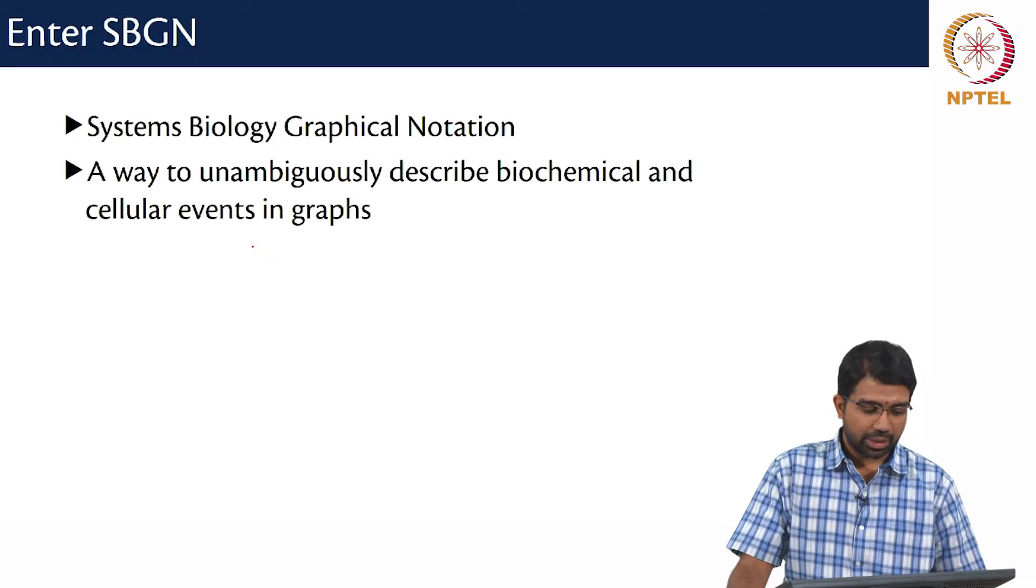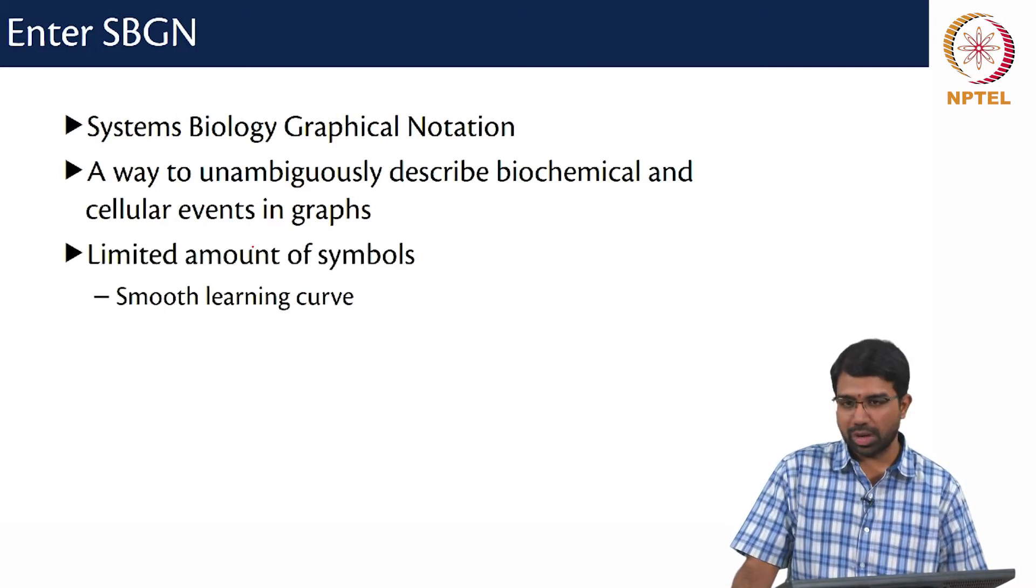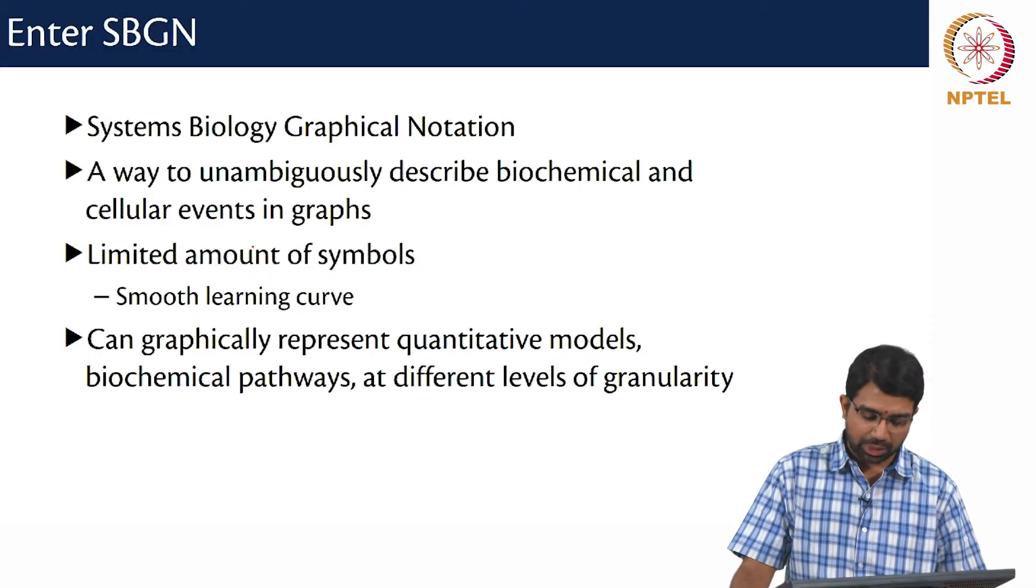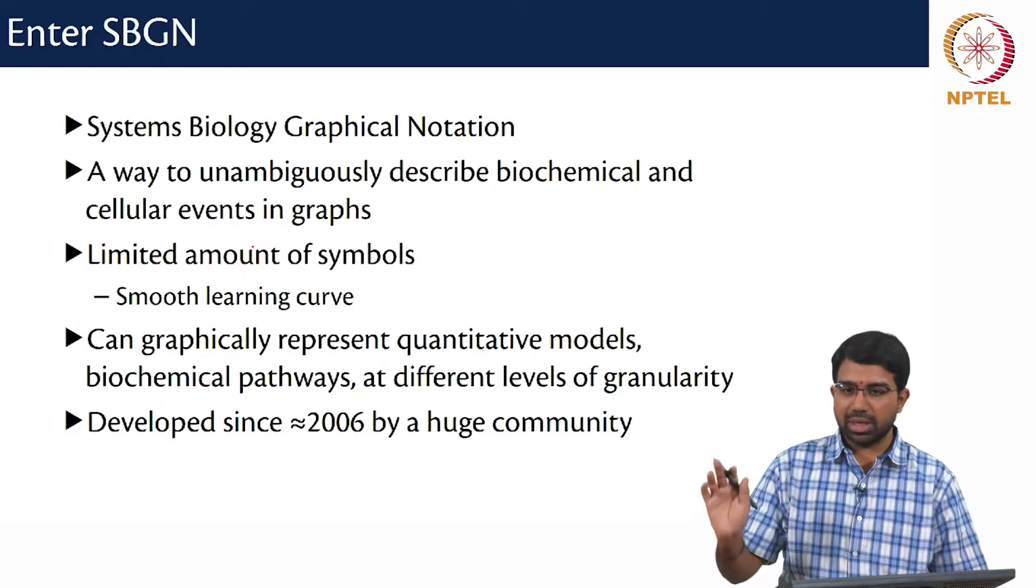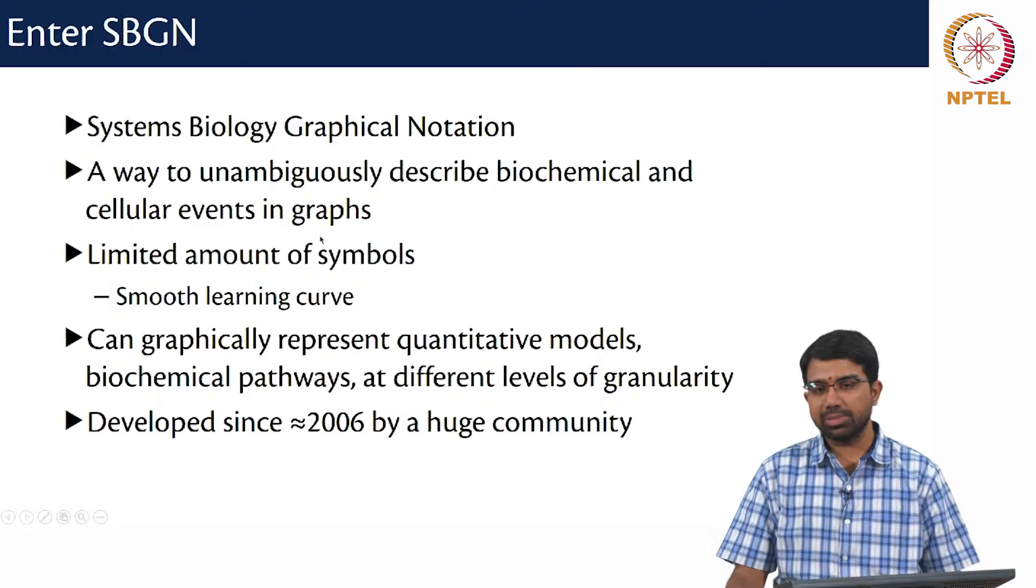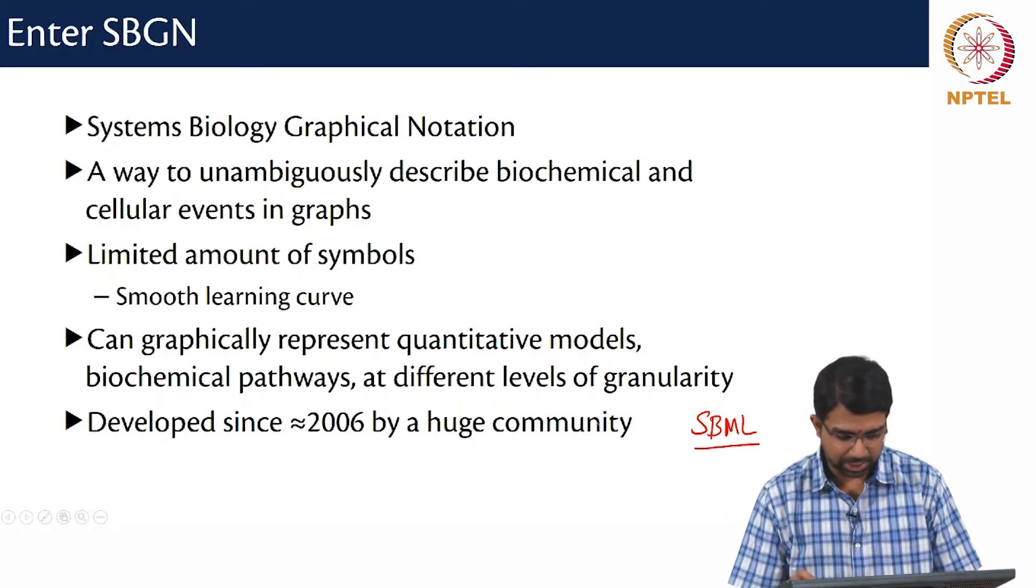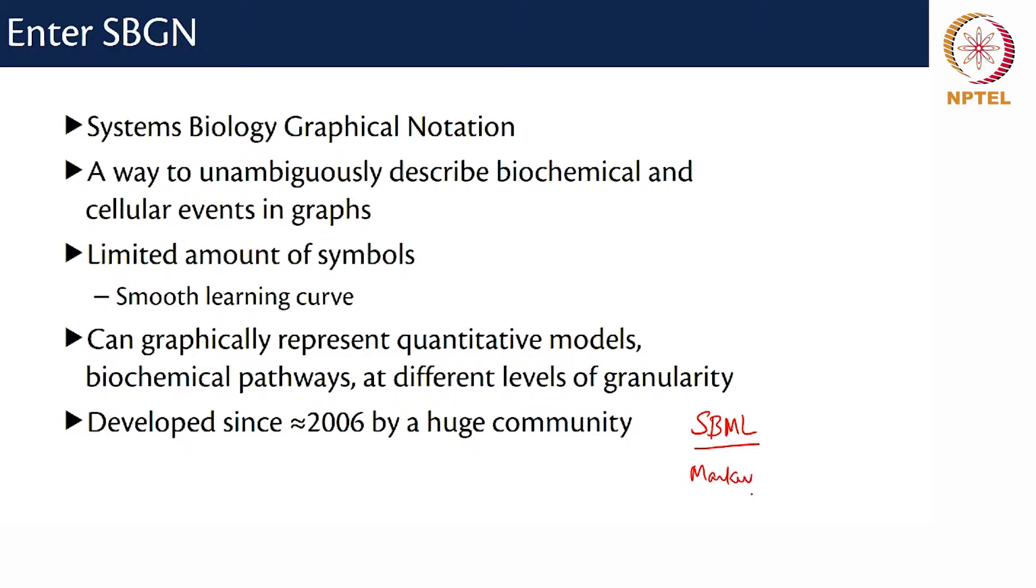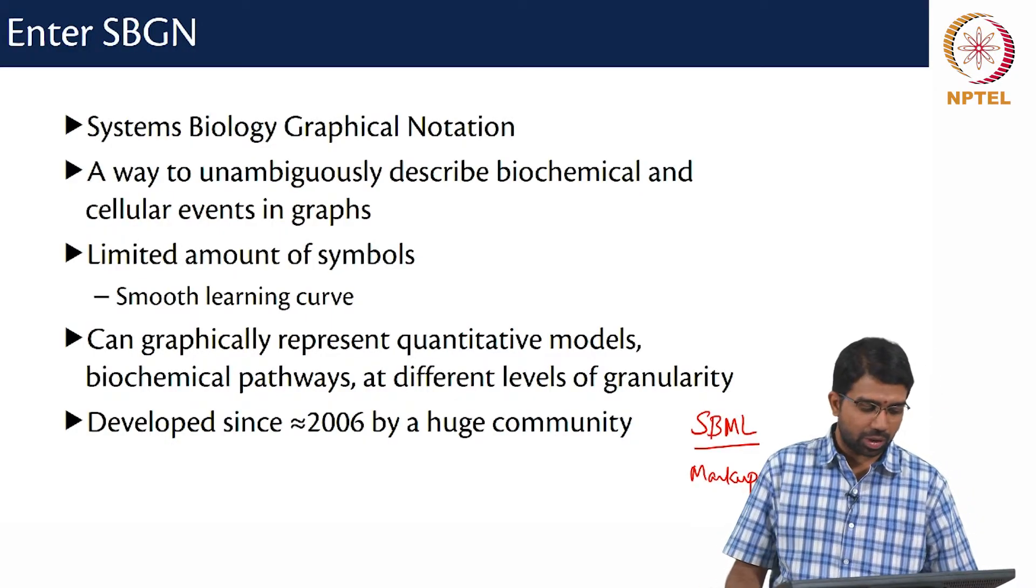So to basically surmount this issue, there came SBGN which stands for Systems Biology Graphical Notation. It is a way to unambiguously describe biochemical and cellular events in graphs. Limited amount of symbols, therefore you have a smooth learning curve and you can graphically represent several quantitative models of biochemical pathways at different levels of granularity. And this has been developed for the last ten plus years by a huge community which overlaps significantly with the SBML community. SBML stands for Systems Biology Markup Language. So we will try to look at an SBML file soon as well but for now let us look at how SBGN works.